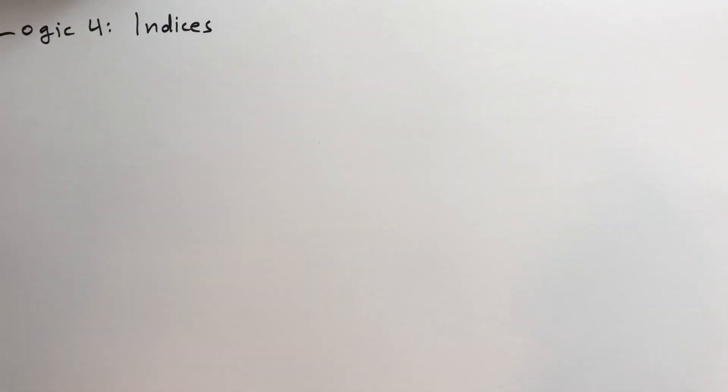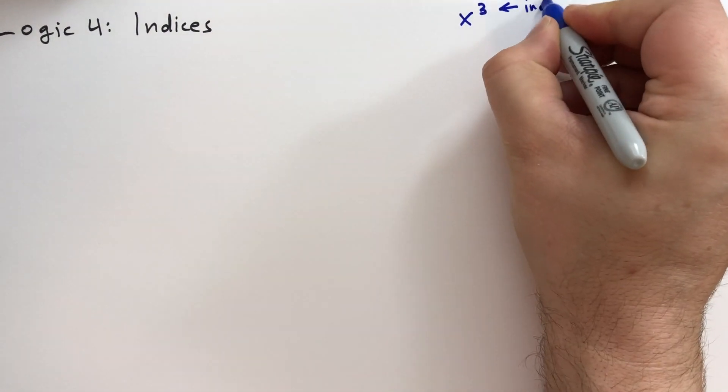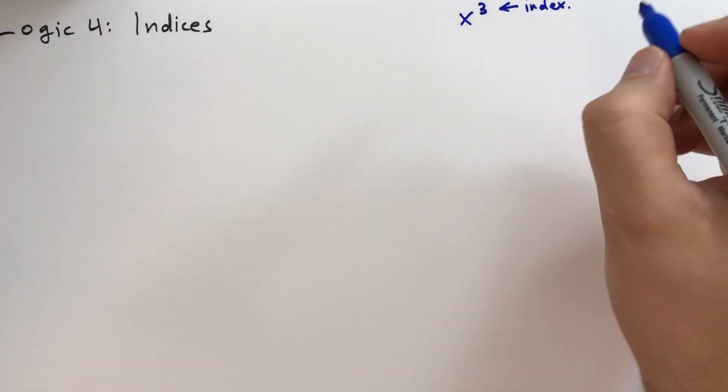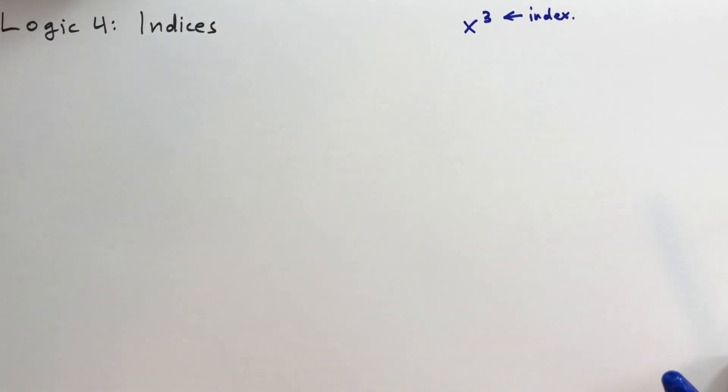When I was teaching Singapore math to my children, we were using the algebra textbooks, and they called indices the exponents. So they said like x to the three, the three is the index. This is what they said in Singapore math. Now Singapore math, I believe, is the English or British system. So they're using the terminology there.